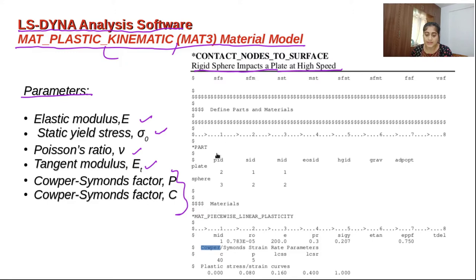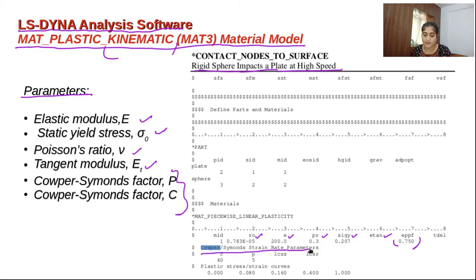The inputs are: density (rho), elastic modulus, Poisson's ratio, Young's modulus of elasticity, tangential modulus, failure plastic strain, and the Copper Cement strain rate parameters — the C and P values. This is one screenshot showing how to give these parameters.